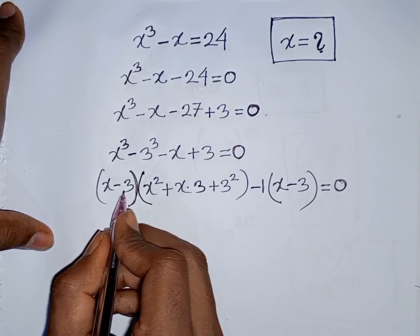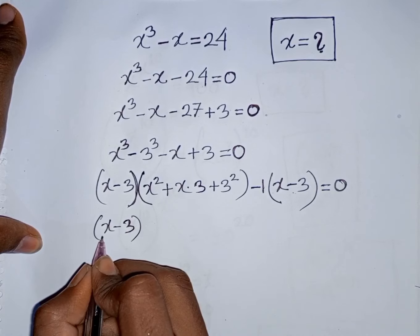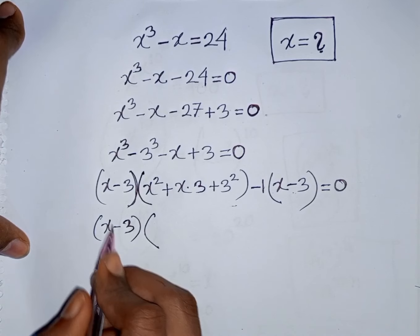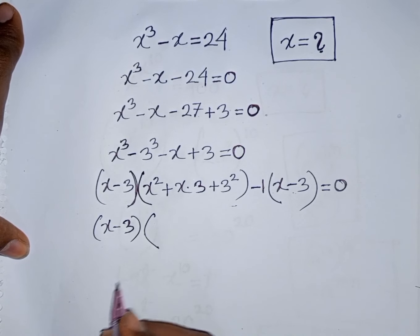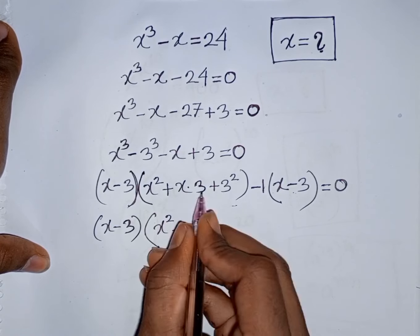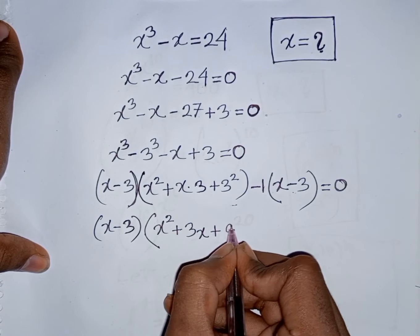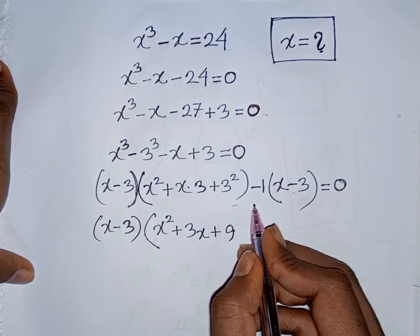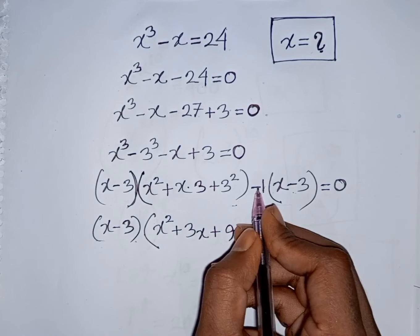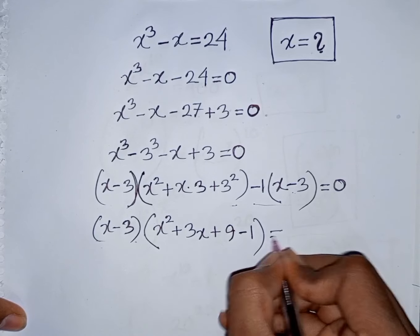Now, we take common factor x minus 3. So, x minus 3 is factored out of this bracket. This divided by this — x minus 3 will be cancelled. So, we have x square plus x times 3, that means 3x, then plus 3 squared which is plus 9. Then this divided by this — x minus 3 will be cancelled — giving minus 1. Bracket close is equal to 0.